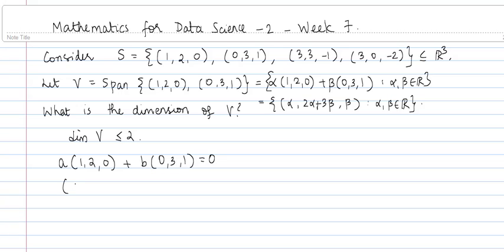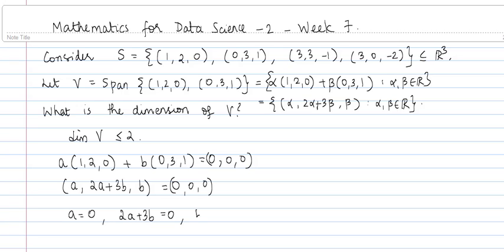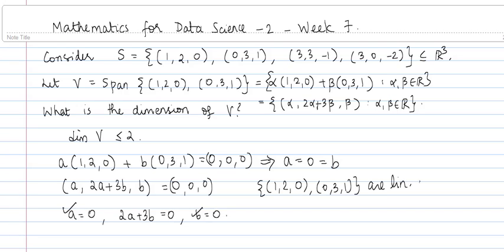Let us check that. This reduces to (A, 2A + 3B, B) = (0, 0, 0). Equating the components, we have A = 0, 2A + 3B = 0, and B = 0. From the first and third equations, we already have A = B = 0. This implies that the vectors (1, 2, 0) and (0, 3, 1) are linearly independent. Since these 2 vectors are linearly independent and span V, the basis of V is this set, so the dimension of V is equal to 2.